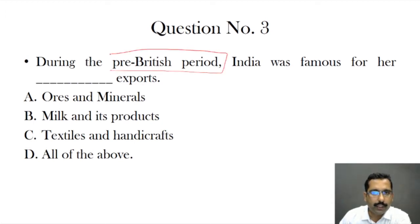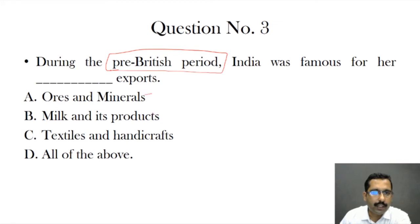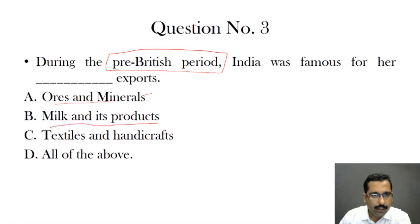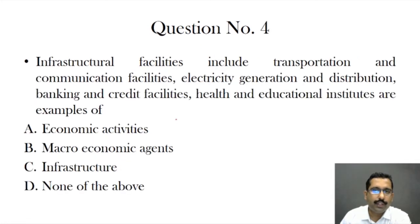The third question is: during the pre-British period, before the British captured India and made it their colony, India was famous for her exports in which of the following — ores and minerals, milk and its products, textiles and handicrafts, or all of the above? Worldwide, India was very popular for her textiles and handicrafts, so the answer is option C.